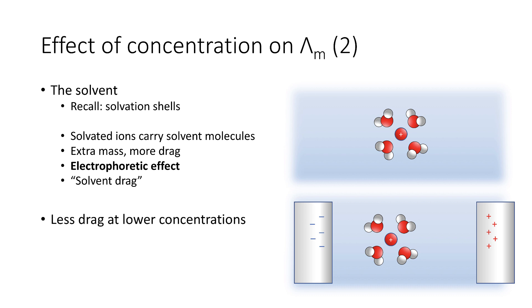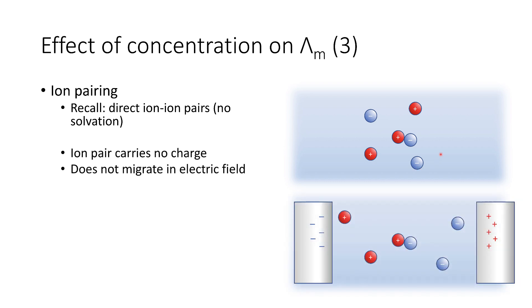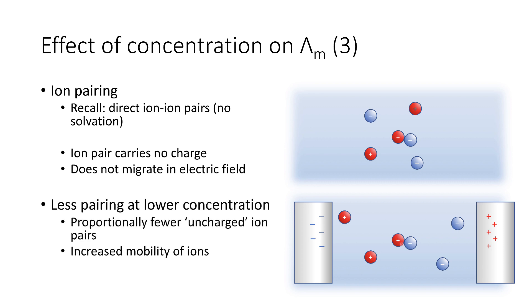At lower concentrations, we get less drag. If we think about lots of solvated ions moving together, they have to push past each other. At lower concentrations there is more free solvent, more space between the ions, and it's easier for those solvation shells to slip past each other. Regarding ion pairing: ion pairs carry no charge, so when placed in an electric field, free counter-ions move but the ion pair stays locked together. At low concentrations, we get less pairing, so there are proportionally fewer uncharged ion pairs, and the net mobility of ions in solution increases.